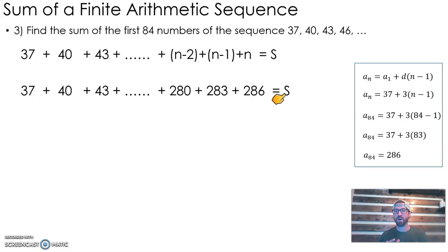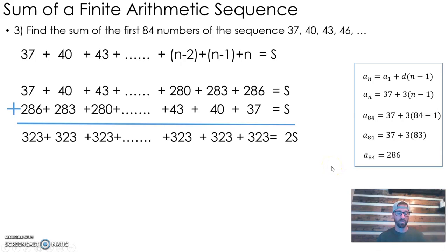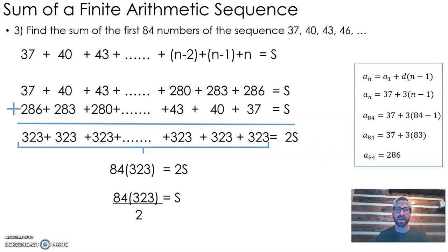That means I've got 286. The term before that would be 3 less, and before that 3 less. This is what our sum looks like. Without manually adding all those up, we can use the same reasoning Gauss used. Let's write the same series in reverse order below it. 37 plus 286 is 323, and 40 plus 283 is 323. All of these sums will be 323. If I can figure out how many times I'm adding 323 together, that's twice the sum we want. We were doing 84 terms, so we added 323 to itself 84 times. That gave us twice the sum, so divide by 2 on each side.